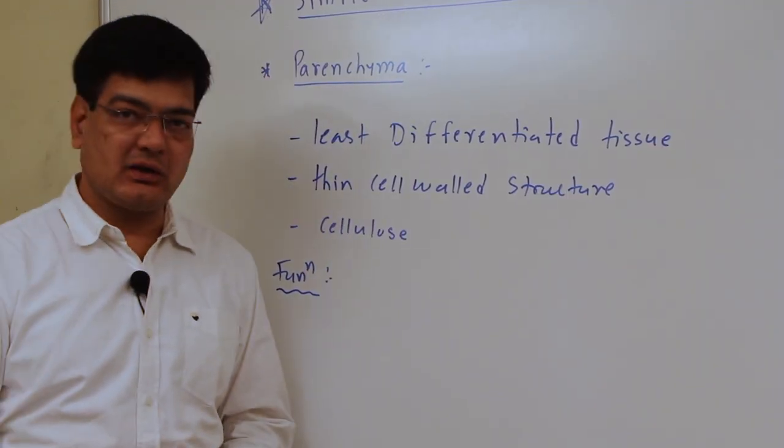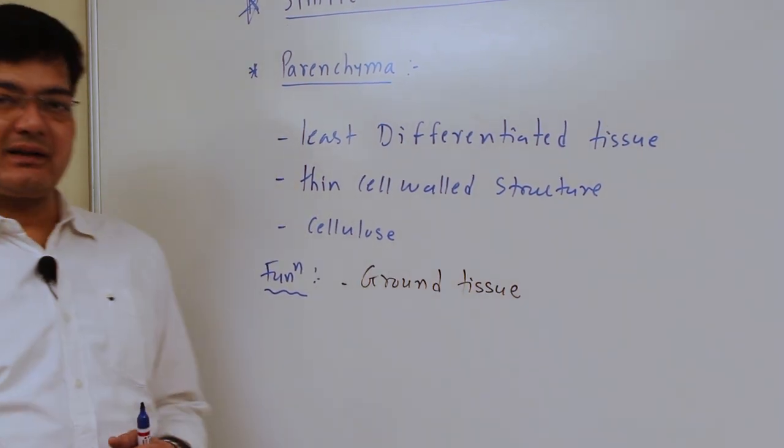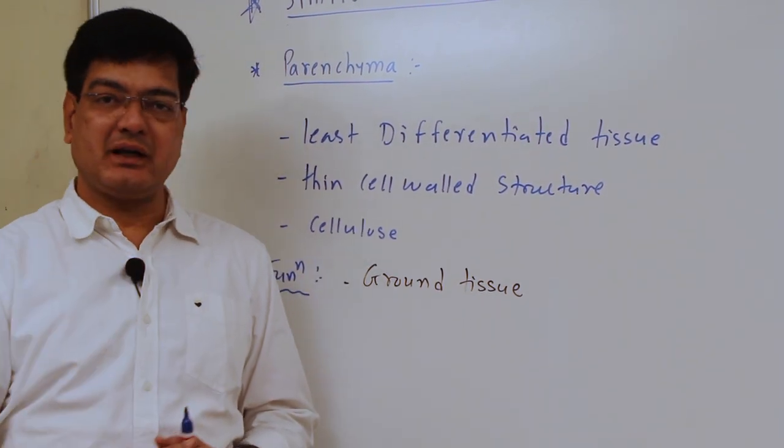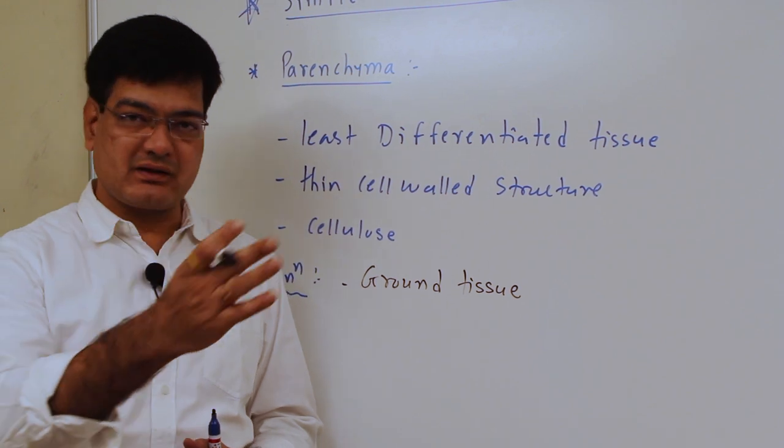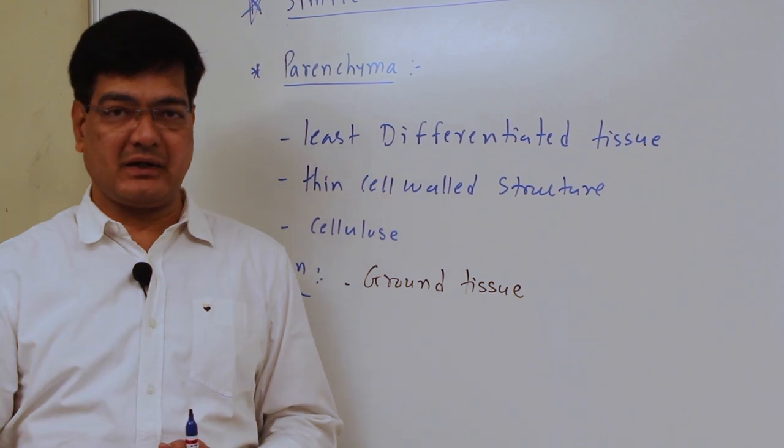If we talk about the function of parenchyma, parenchyma is ground tissue. Whenever there is a gap between two different plant tissues, parenchyma is always present. That's why it is considered as ground tissue in the case of plants.